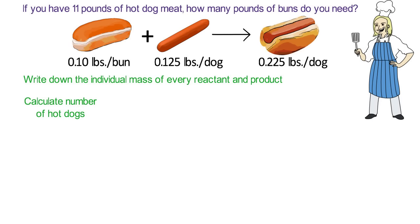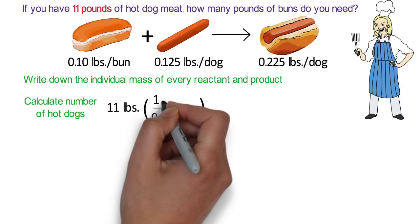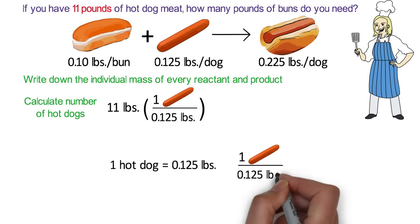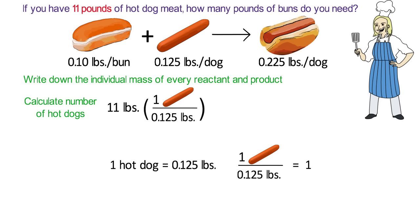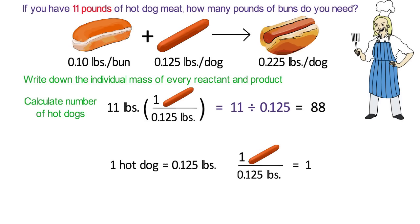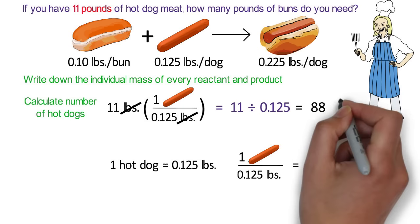Next, we need to calculate the number of hot dogs we have. This is a unit conversion problem, so we first write down the quantity that we know: 11 pounds of hot dogs. Multiply this by a conversion factor fraction. The weight of one hot dog is our conversion factor. Because we are starting with pounds, we put 0.125 pounds on the bottom of the fraction, and because we are solving for the number of hot dogs, we put one hot dog on top. Remember that our conversion factor fraction is always equal to 1. The number of hot dogs is 11 divided by 0.125, and the answer is 88 hot dogs.